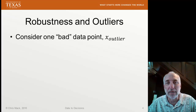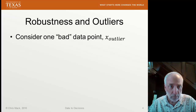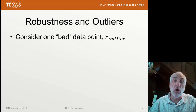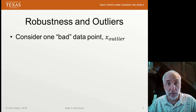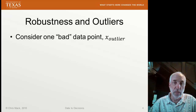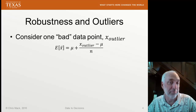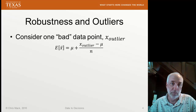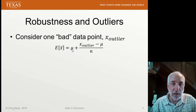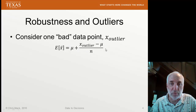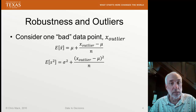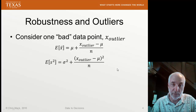Let me mention outliers and how they relate to robustness. Consider one bad data point — bad meaning it's highly unusual, very different from all the others, caused by a mistake or some other reason. It's a contaminant coming from a different distribution. If we look at the mean of our sample including this one outlier, the expected value of that mean is going to be the mean of the population plus an extra term coming from the outlier. Likewise, the expectation value of the sample variance will equal the population variance plus this extra term.